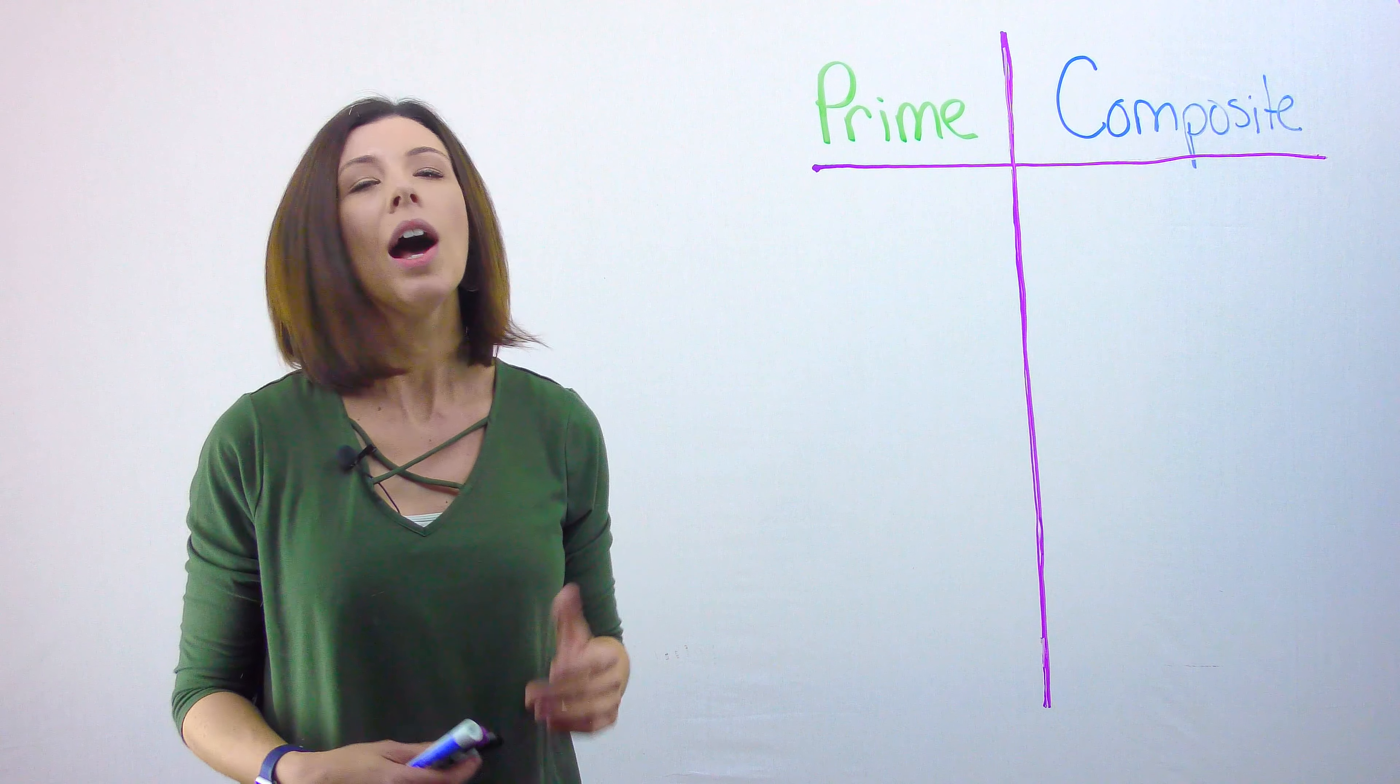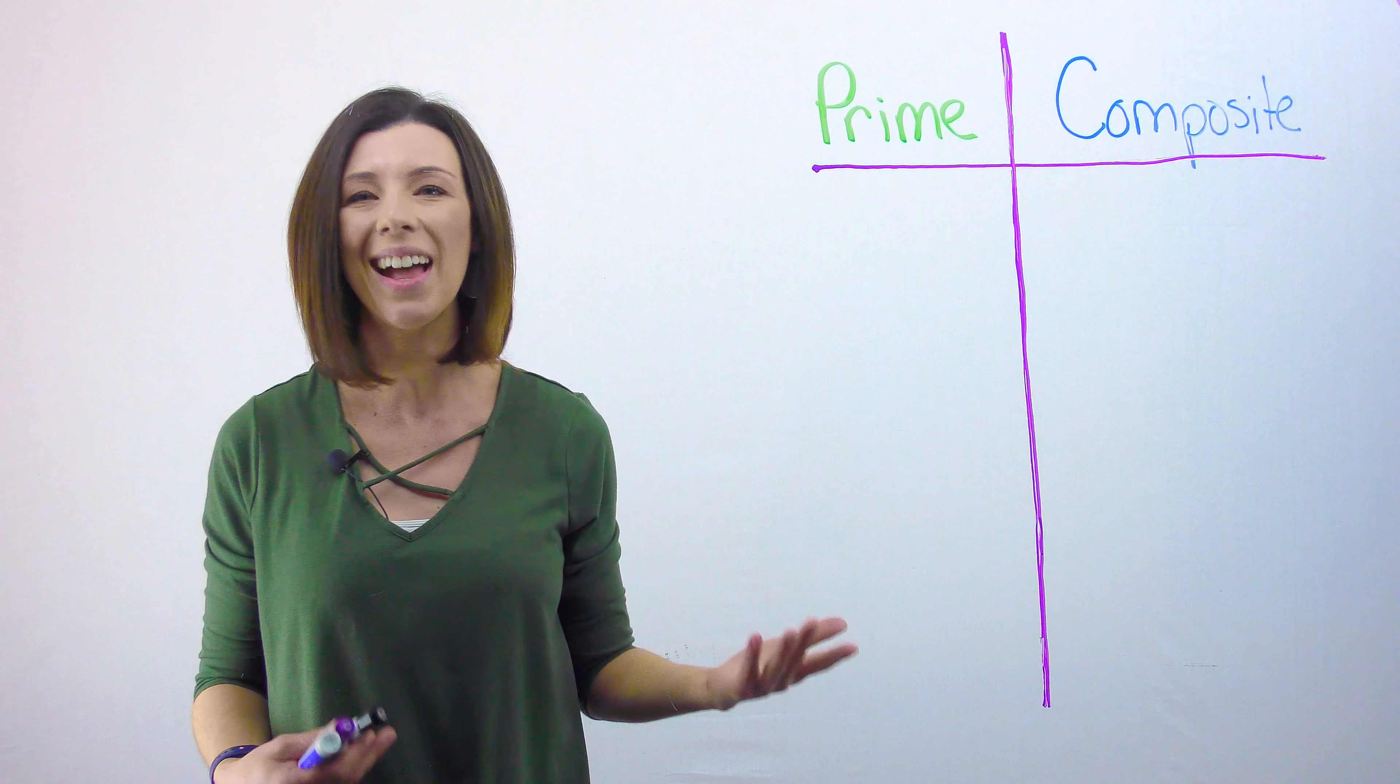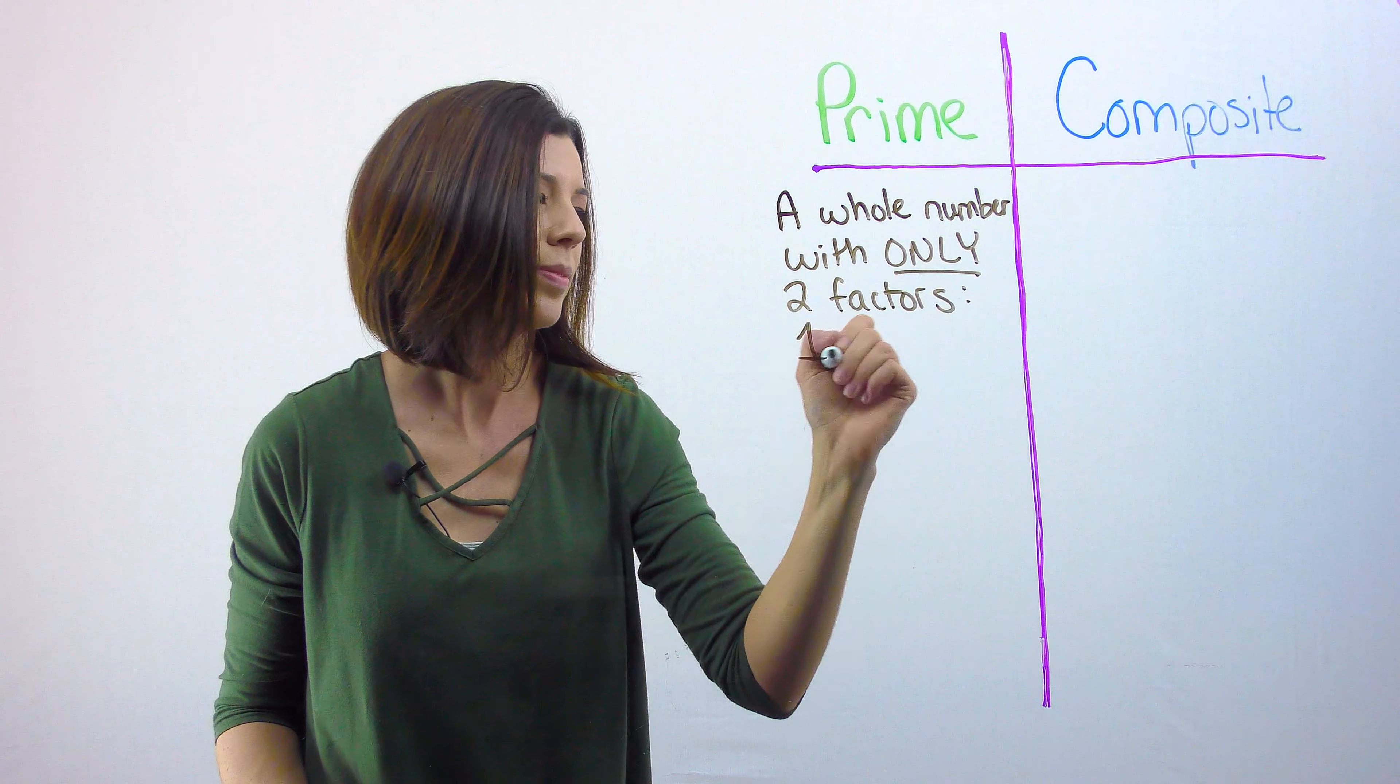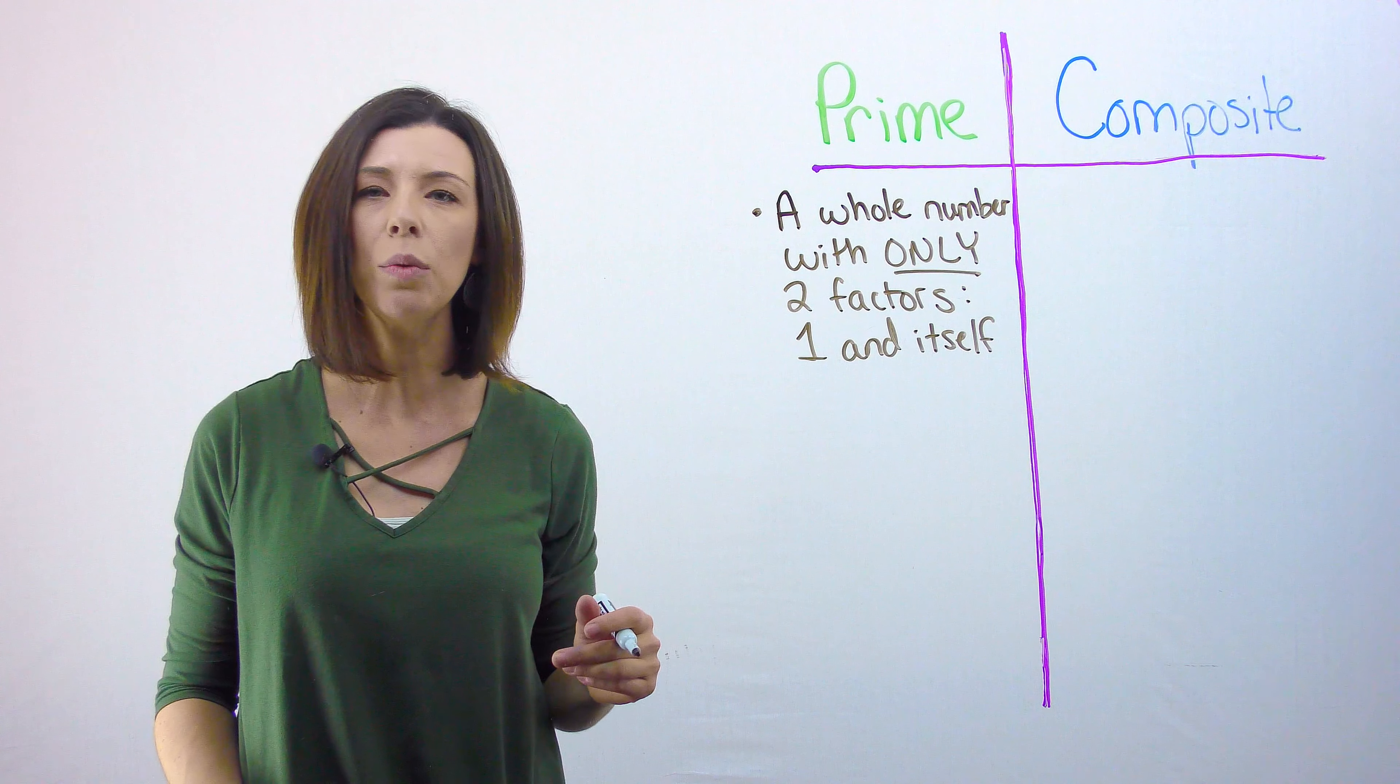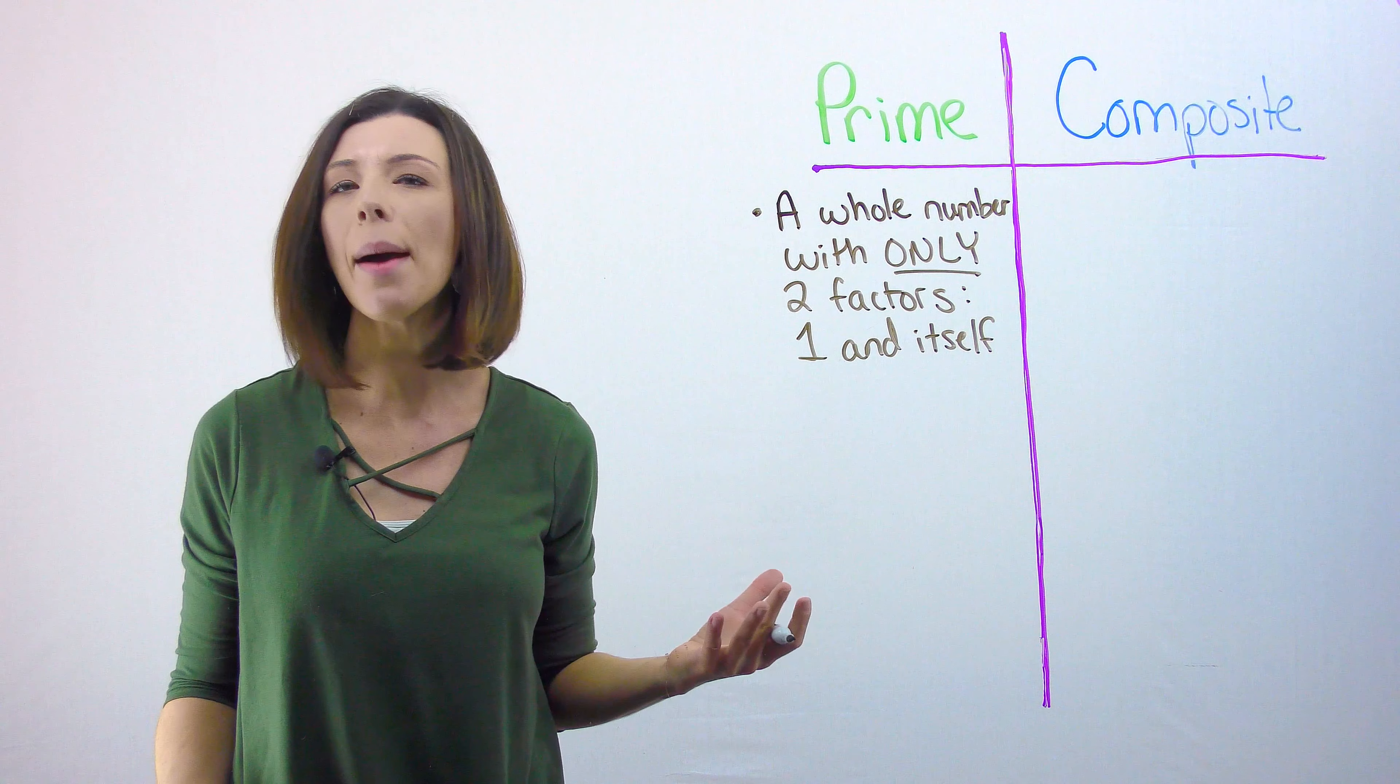So prime numbers are numbers that have only two factors, one and the number. An example of this would be the number 17. The only two things you can multiply to get it would be one and 17. So one times 17 is 17, that makes it prime.